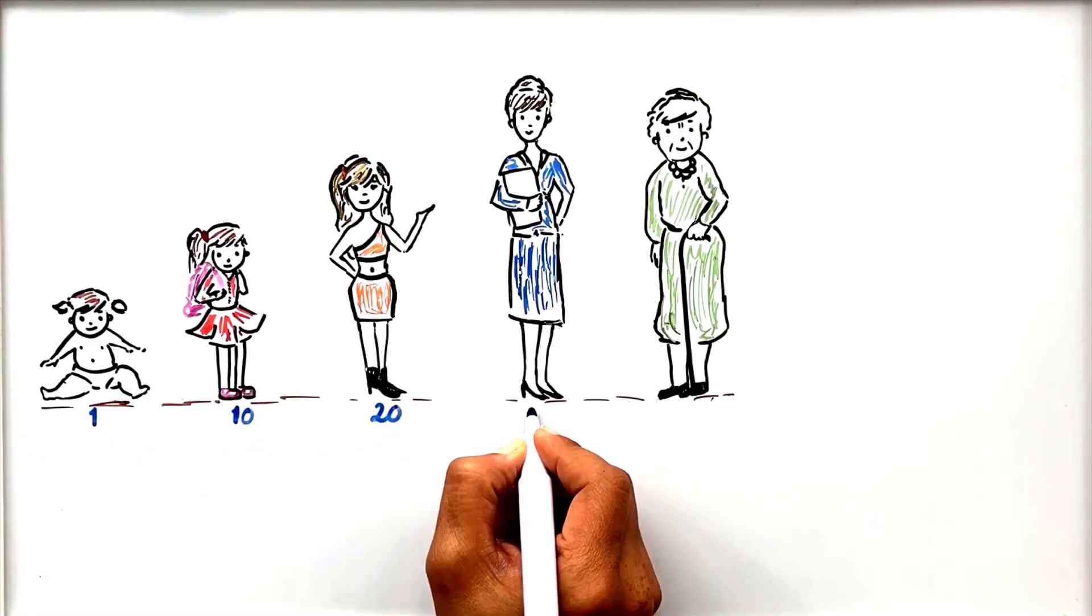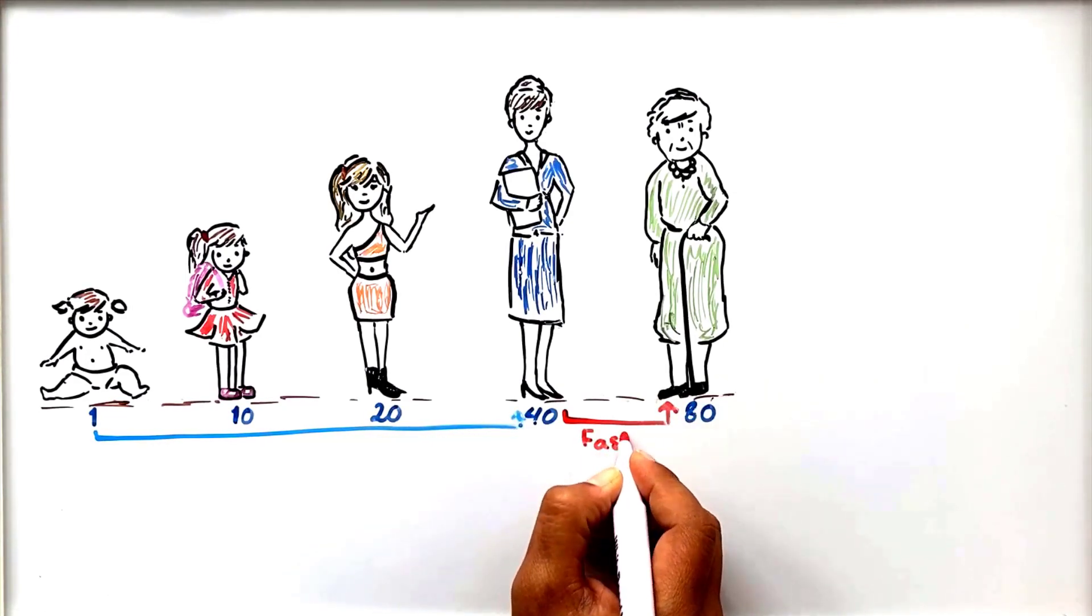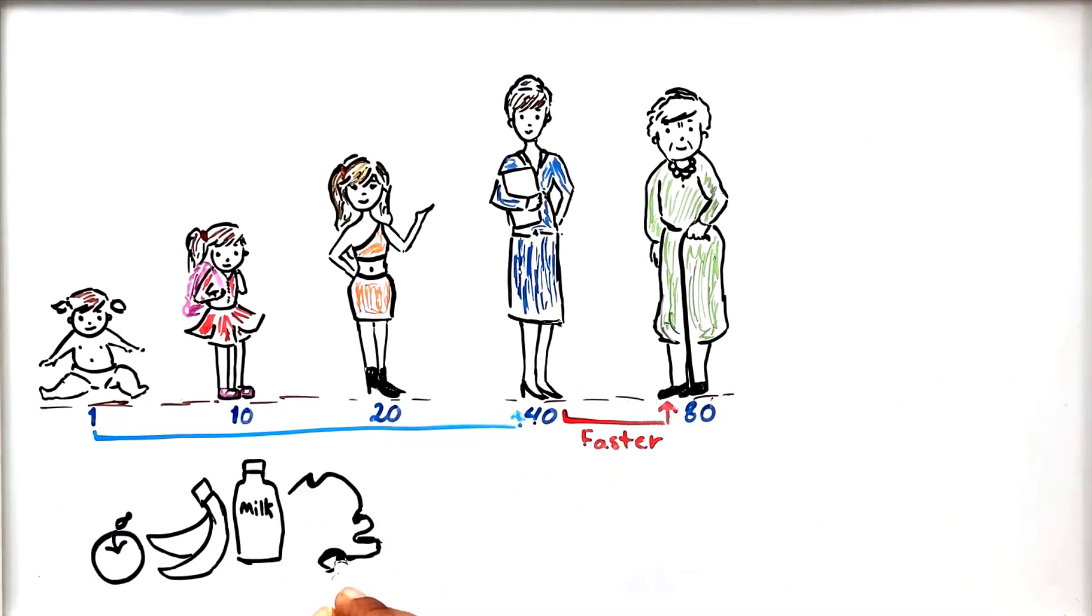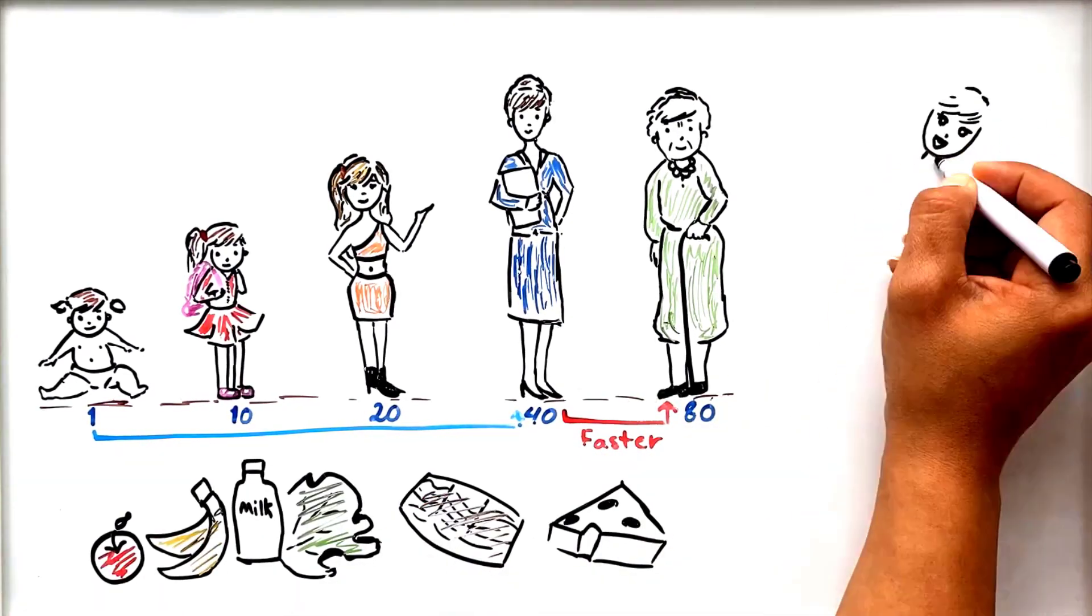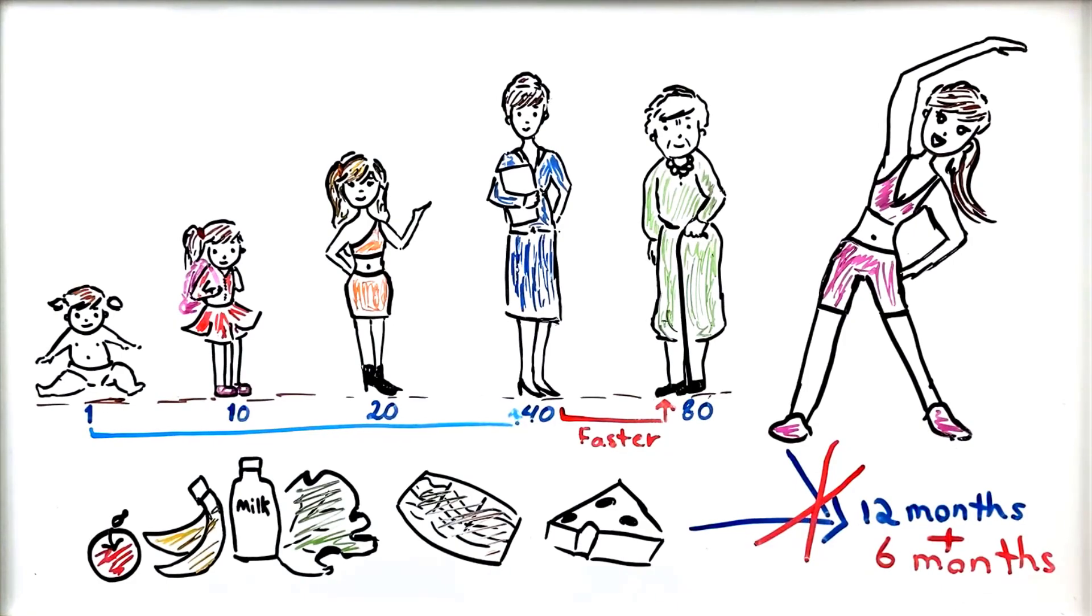Did you know that once you hit 40 years old, your body starts aging faster than normal? Studies show without the proper nutrition and exercise, your body will age about six months extra for every year that passes, especially after 40.